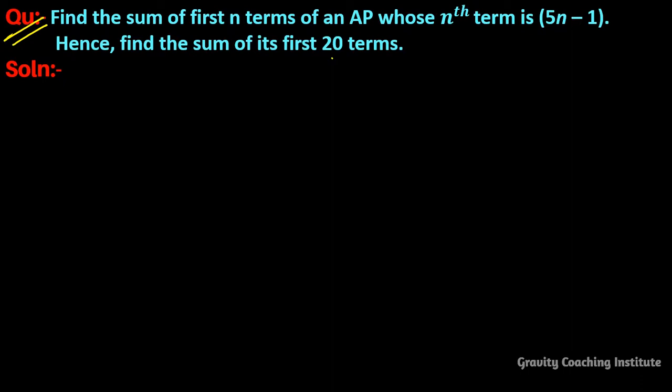We will find the sum of first n terms of an AP. Its nth term is given as an equals 5n minus 1.